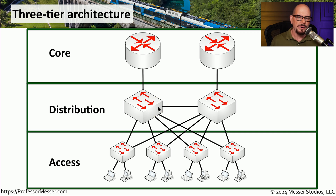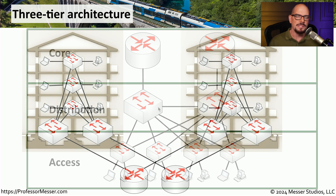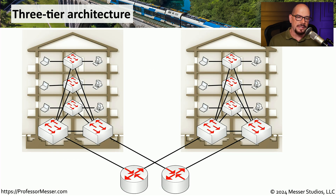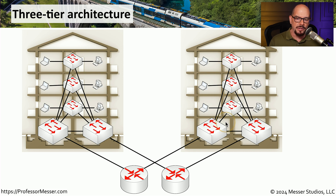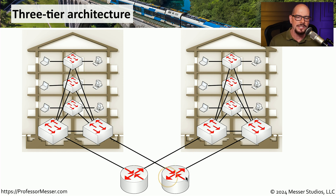So if one component happens to fail, we can always use other parts of the network to complete that communication path. This is often combined with multiple buildings. On a single campus with two separate buildings, all users are connected on each floor to an access switch. Each access switch is usually connected to one or more distribution switches, and those distribution switches are connected to the core of the network, which may be located in a central data center.